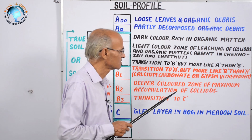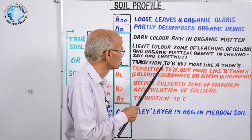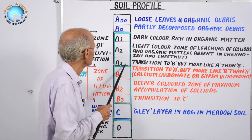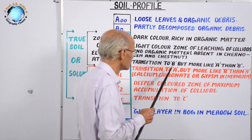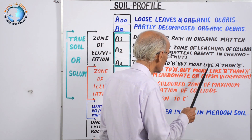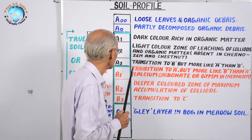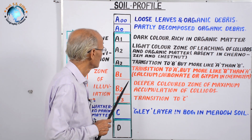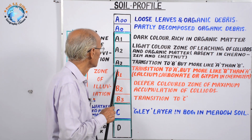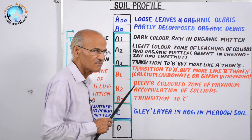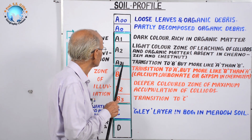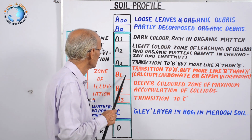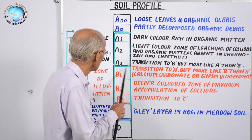Chestnut soil is found just to the south of the Chernozem soil belt. After A2 comes A3, which is a transition to B — it is more like A than B. We can draw a line between A3 and B1, but in nature there is no clear boundary; rather, these two are in mixed form. However, the characteristics of A3 resemble A more than B.